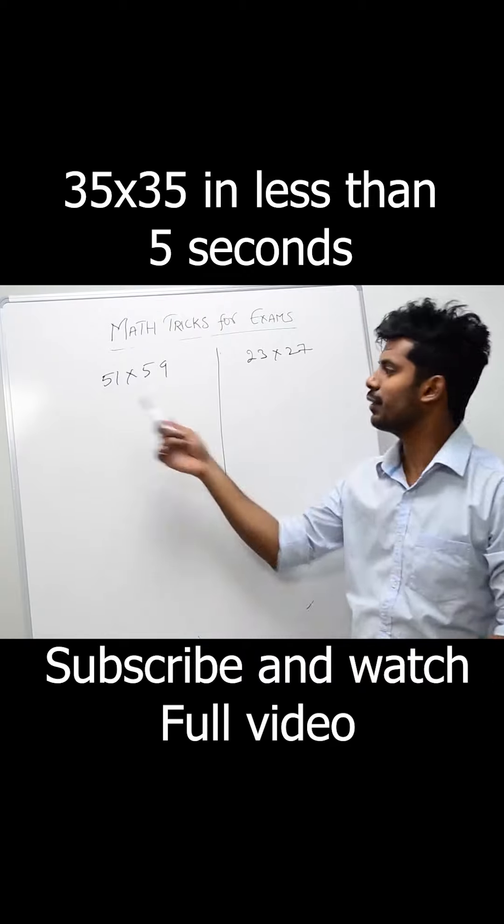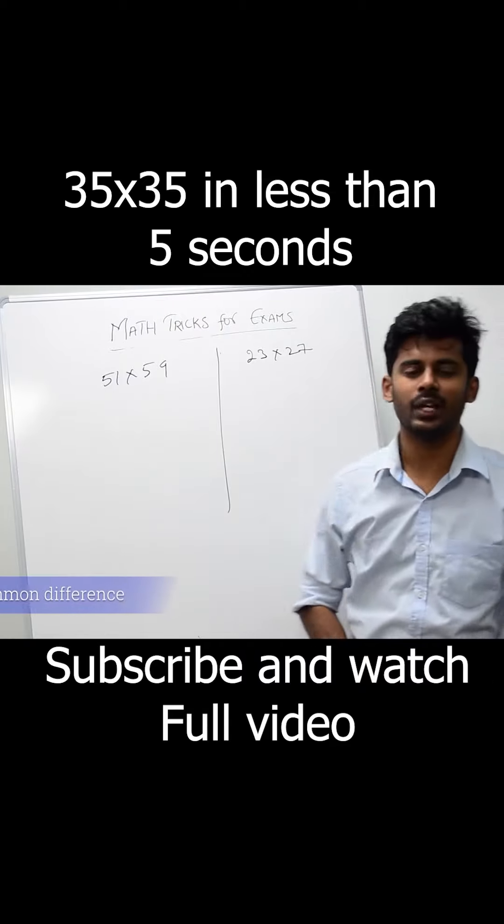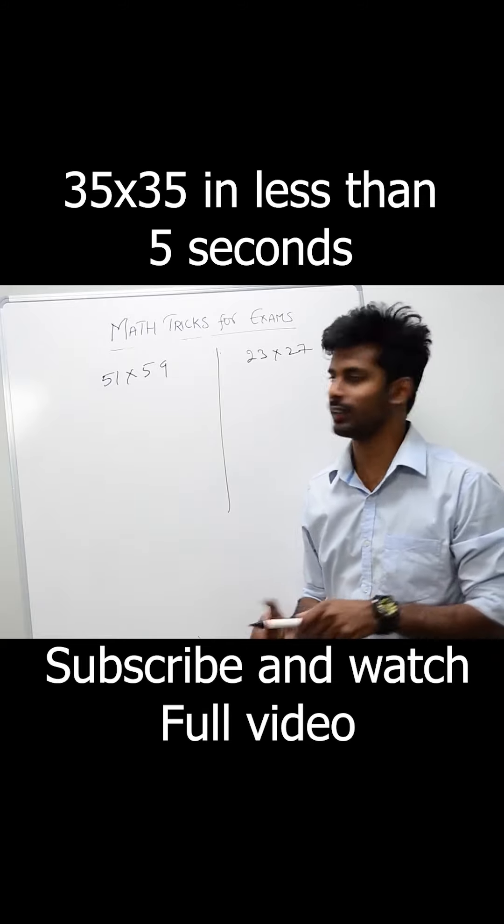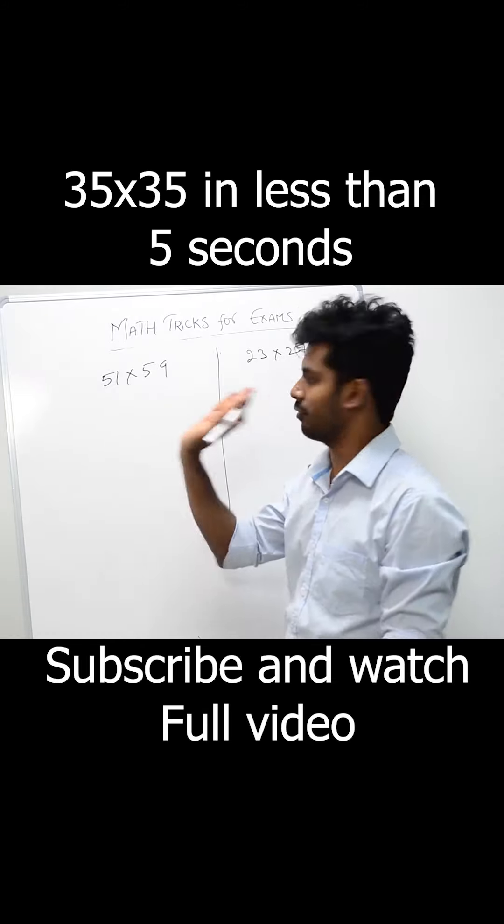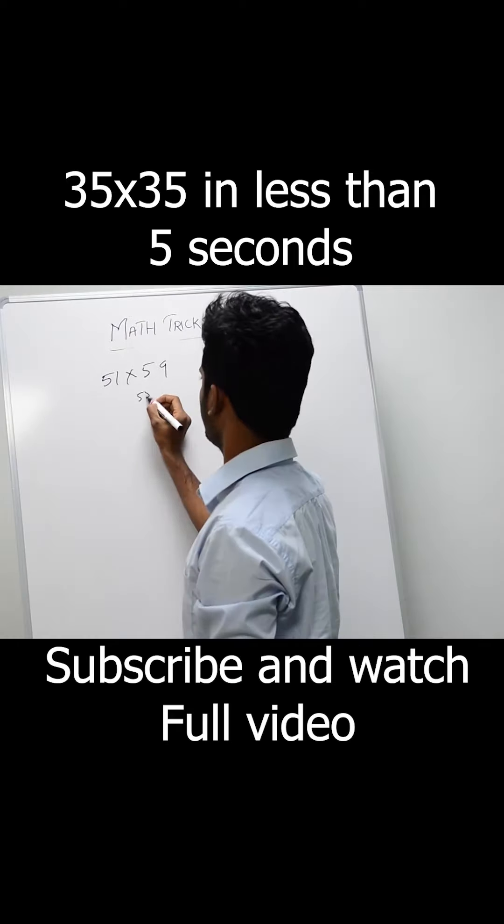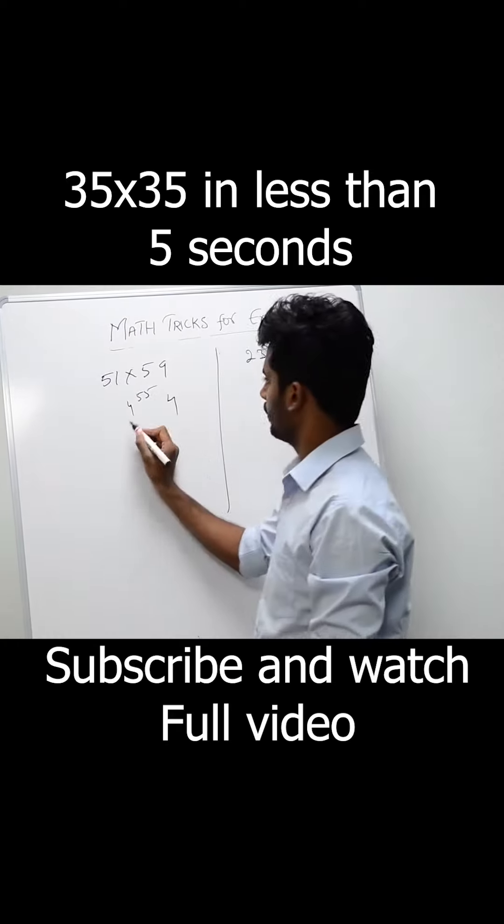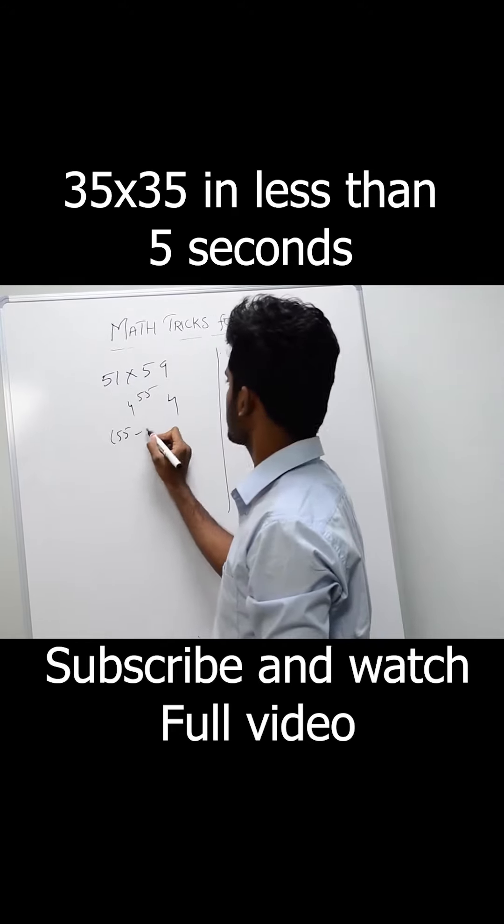So the next trick is 51 times 59 and 23 times 27. If you want to calculate this, you just have to see one important thing. Just take a number and see a common difference. For example, if you take 55, this is 4 less and this is 4 above. It means 55 minus 4 and 55 plus 4.